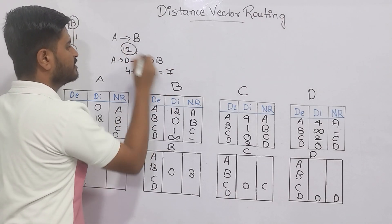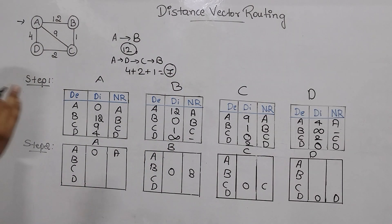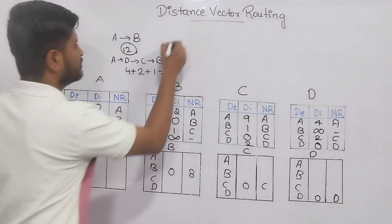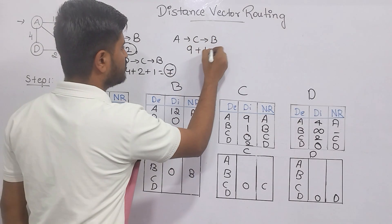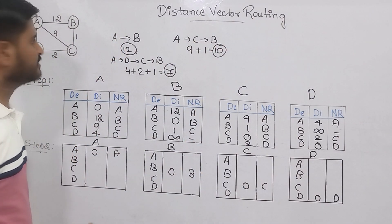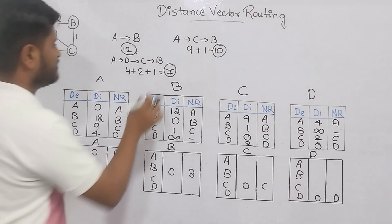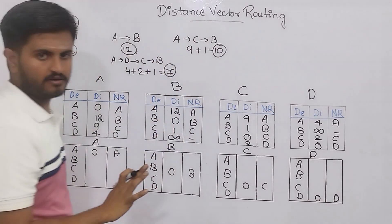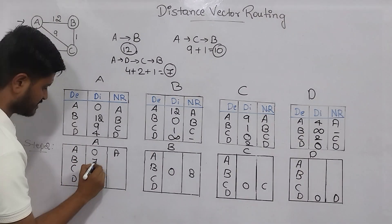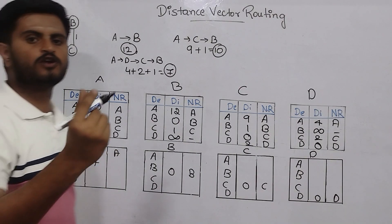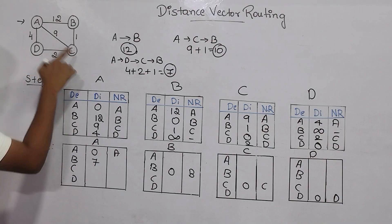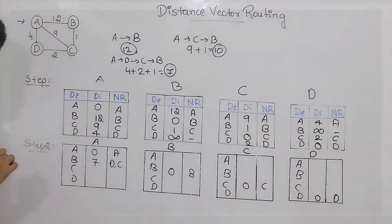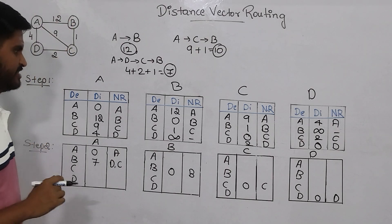Among 7, 12, and 10, the smallest value is 7. So I will write 7 as the shortest distance from A to B. Which routers did I use? From A, I used D and then C to reach B. So I must write D, C as the next routers used. I used D and C to move to B with the shortest distance of 7.